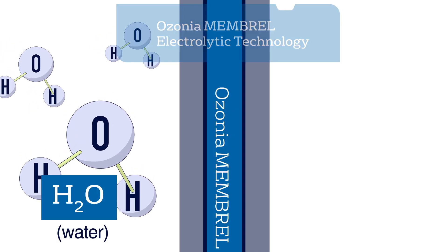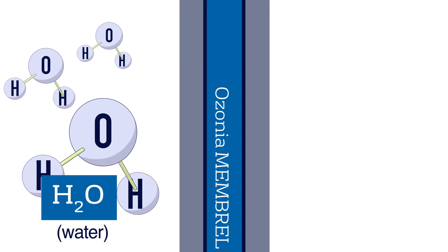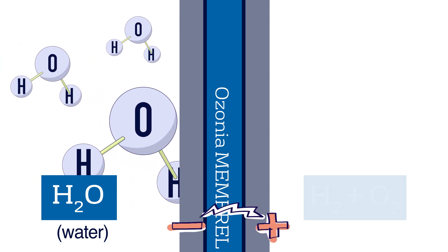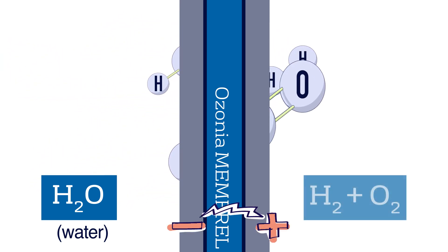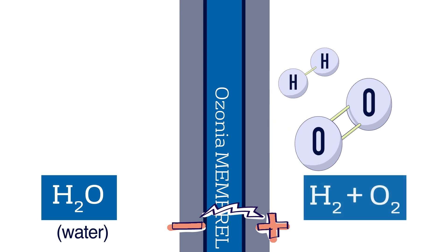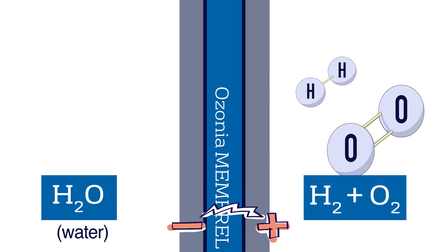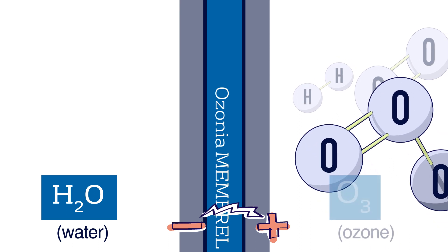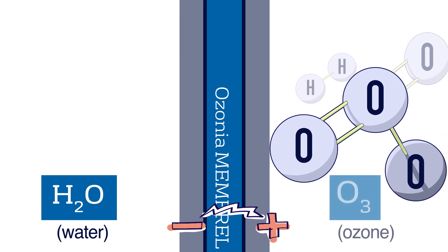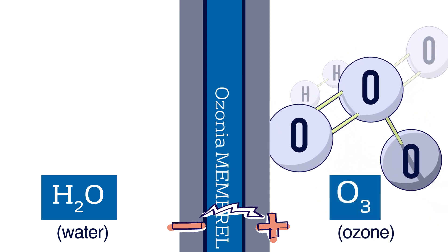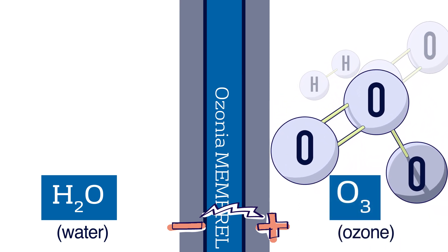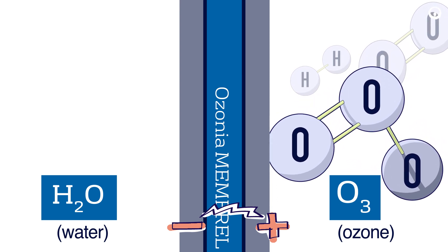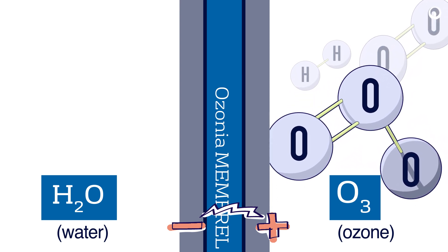Ozone is produced from ultrapure water via electrolysis. Water flows through the membral cell and is separated into oxygen and hydrogen. Oxygen is converted to ozone, a powerful oxidation agent. Because the only source component is the ultrapure water itself, no contaminants are introduced as with other technologies.